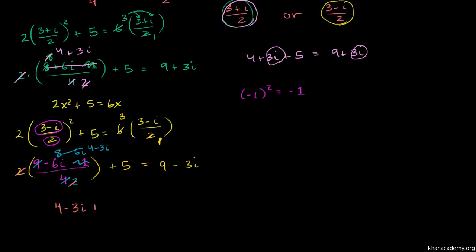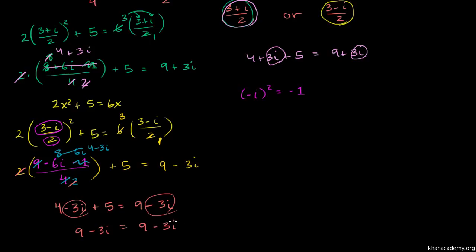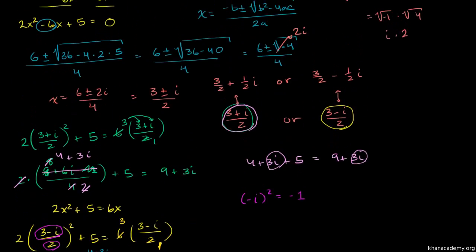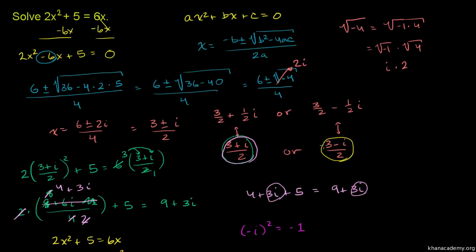Adding 5 to the left-hand side: 4 minus 3i plus 5 equals 9 minus 3i, which is exactly the same complex number as on the right-hand side, 9 minus 3i. So it also checks out — it is also a root. We've verified that both complex roots satisfy this quadratic equation.